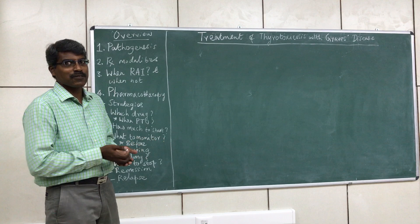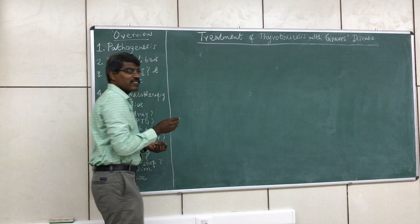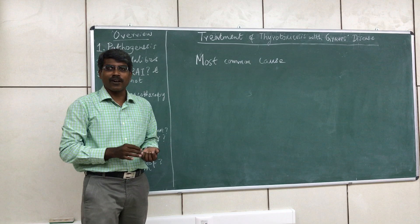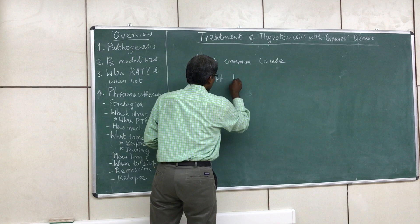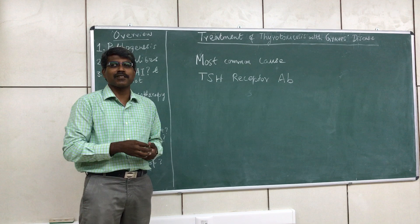First, a small introduction about Graves disease. Graves disease is the most common cause of thyrotoxicosis. It is an autoimmune disorder in which there are thyroid stimulating hormone receptor antibodies. These antibodies stimulate the thyroid gland and increase the synthesis and secretion of thyroid hormone, leading to thyrotoxicosis.